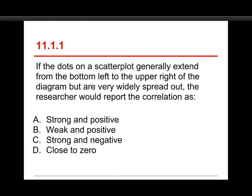The first question in this quiz is: if the dots on the scatterplot generally extend from the bottom left to the upper right of the diagram but are very widely spread out, the researcher would report the correlation as A, strong and positive; B, weak and positive; C, strong and negative; or D, close to zero. In this case, the answer is B, weak and positive.